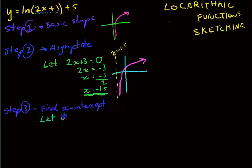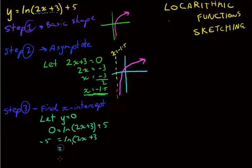To find an x-intercept, if anything, you let y equal 0. So 0 equals ln 2x plus 3 plus 5. That means that negative 5 equals ln 2x plus 3. Now, from here, we can write this in exponential form. So negative 5 equals ln, so that's ln base e, 2x plus 3. We can rewrite this as e to the negative 5 equals 2x plus 3.